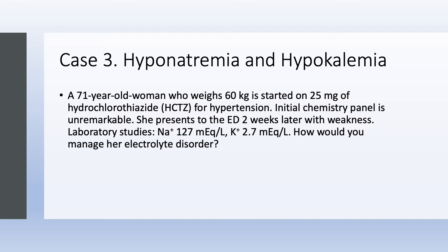Case number 3: Hyponatremia and Hypokalemia. Here we have a 71-year-old woman who weighs 60 kilograms. She was started on 25 milligrams of hydrochlorothiazide for hypertension. Initially her labs are fine. Two weeks later, she comes to the emergency department with weakness. Now she's hyponatremic, sodium 127, and hypokalemic, potassium 2.7. How would you manage?